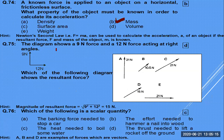A diagram shows 9 N and 12 N forces acting on a body. To find the resultant force: √(9² + 12²) = √(81 + 144) = √225 = 15 N. So the answer is 15 N.